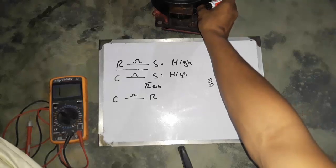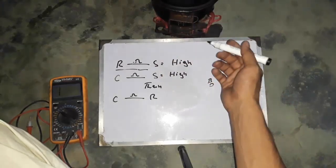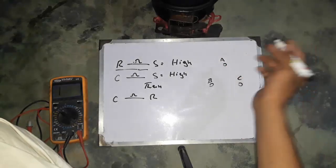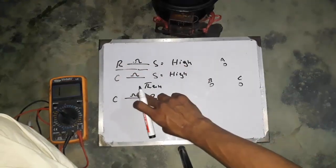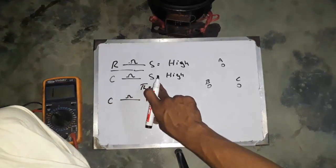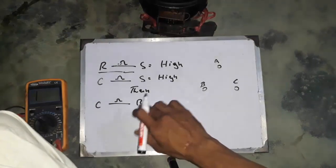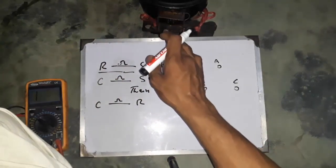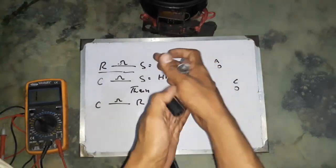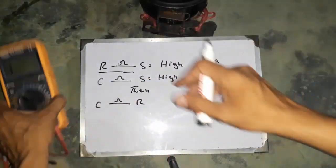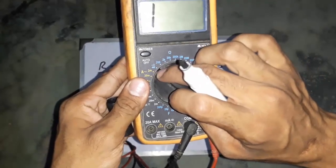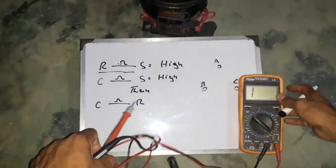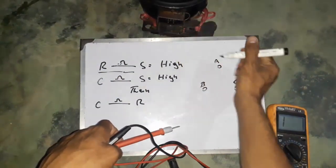Here I have a refrigerator compressor and I don't know about the terminals — which one is common, which is start, and which is run. We follow a simple formula: the resistance between start and run will be the highest, and the resistance between common and start will be higher than the resistance between common and run. I'll use a multimeter on the ohm testing or diode/buzzer option. I have three terminals which I've named A, B, and C.